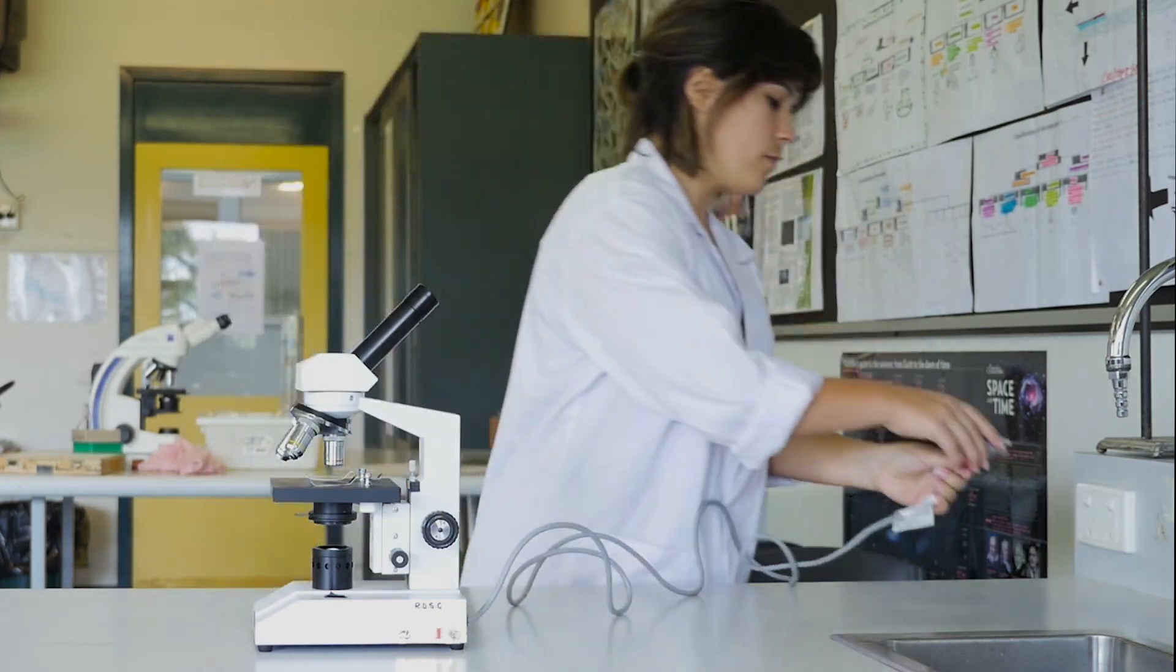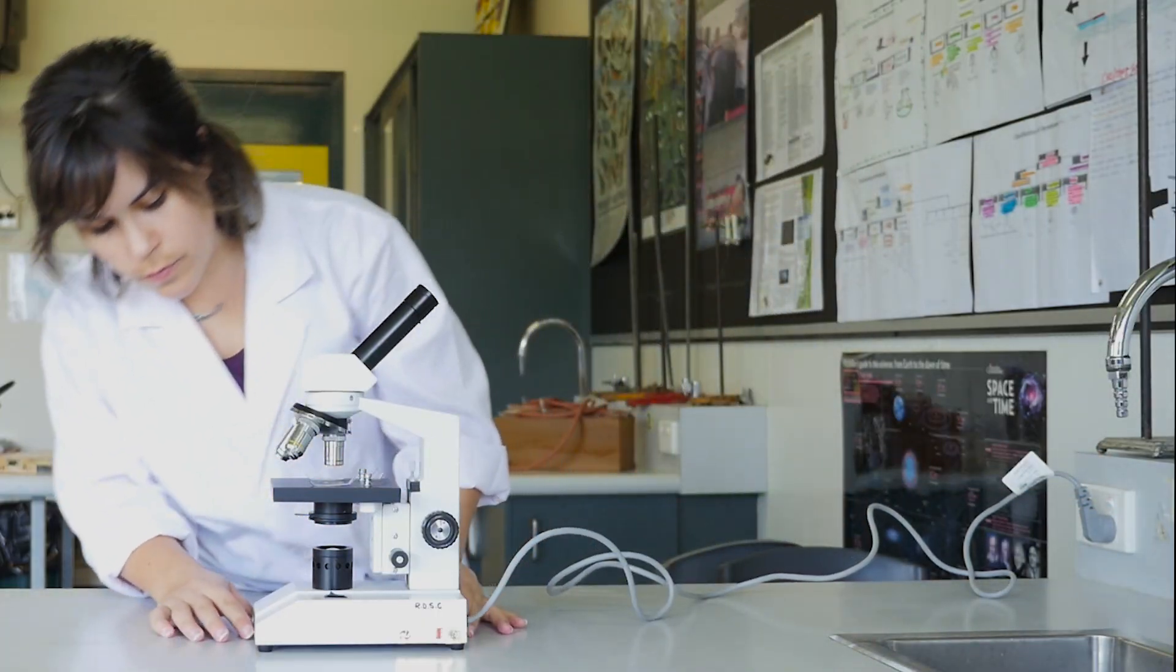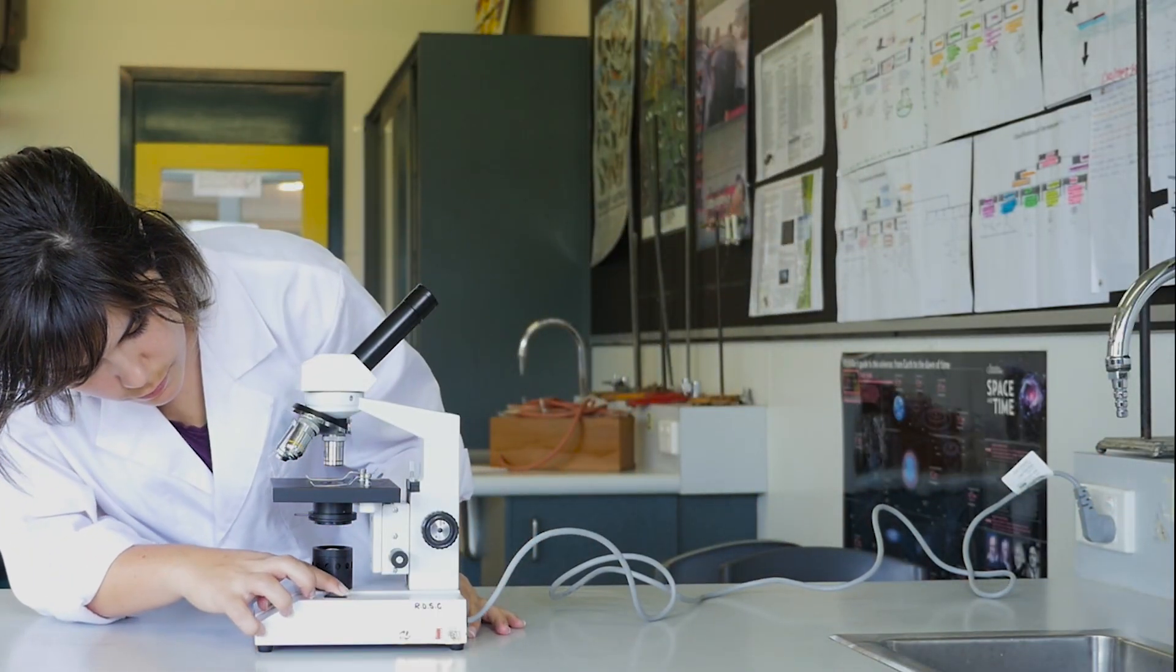Unwind the cord and plug the microscope into the power point. Find the on-off switch. It's usually at the back or side of the base.